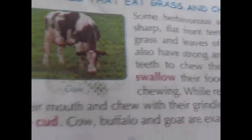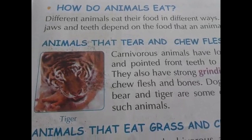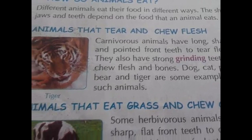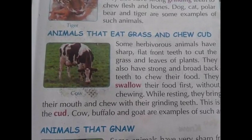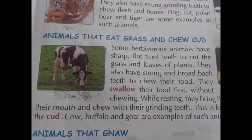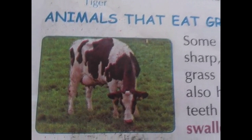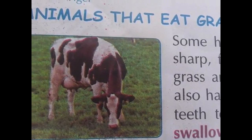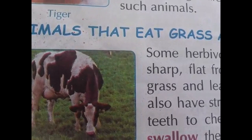Now we are going to learn about how do animals eat. In this topic, we will learn about how animals have different types of teeth. Some animals eat grass and chew cud. Some herbivorous animals have sharp, flat teeth — see the cow — and flat teeth to cut the grass and swallow.